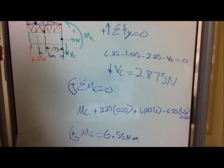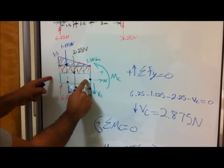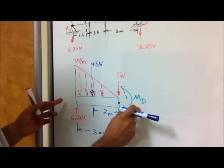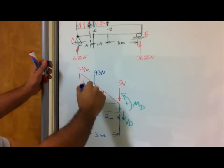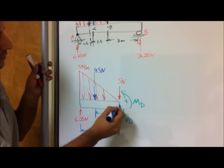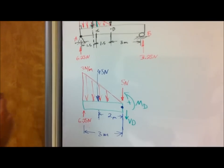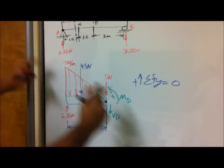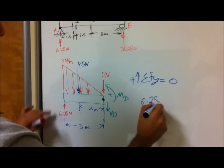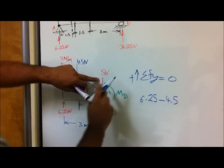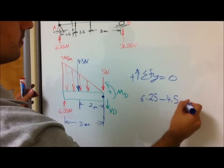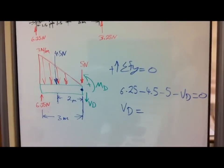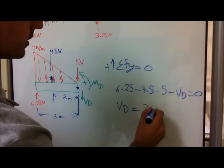That is how you calculate the shear and moment at point C. Now we solve for the shear and moment at point D. The full distributed force resultant is 4.5 N acting at 2 meters from reference. Doing the summation of F-Y equals zero: 6.25 minus 4.5 minus 5 minus V-D equals zero, so V-D equals 3.25 N.